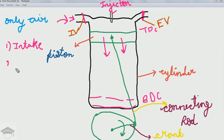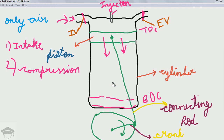The second stroke is the compression stroke. The air that was taken in is now compressed by the piston as it moves from BDC to TDC. At this time, both the intake valve and exhaust valve are closed. Because of the high pressure, both are closed, so the air has no route to escape and it gets compressed. When compressed, both pressure and temperature increase.